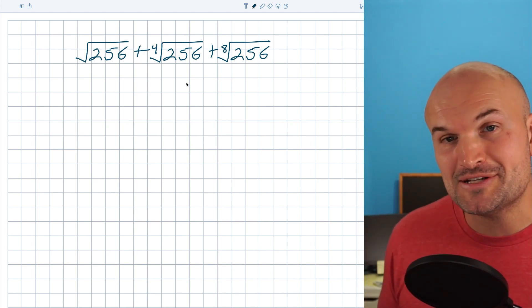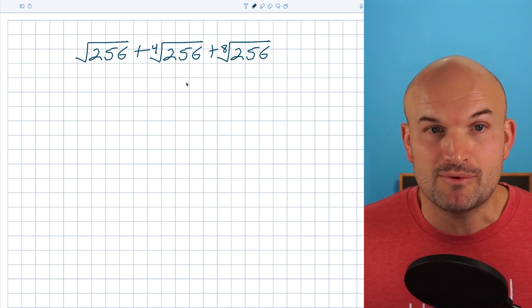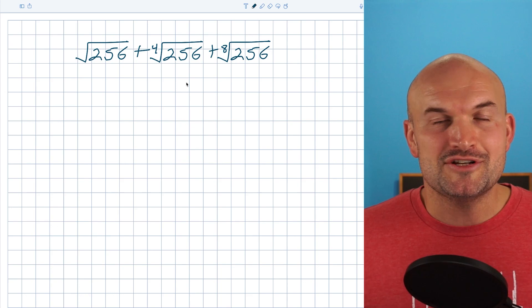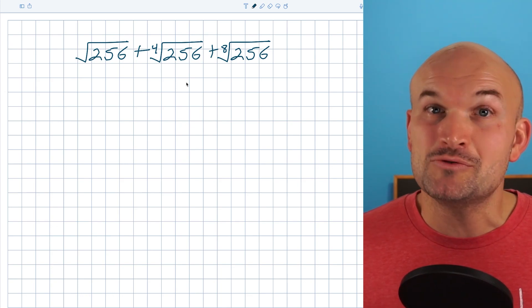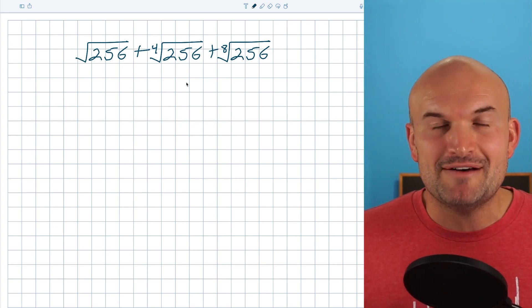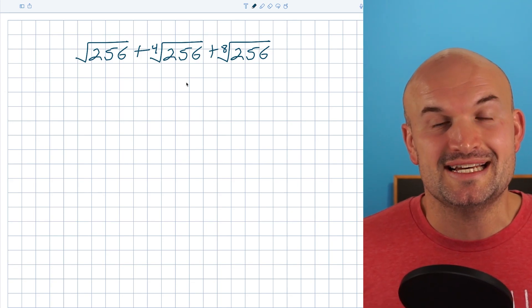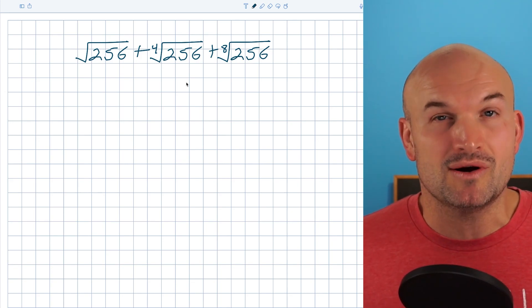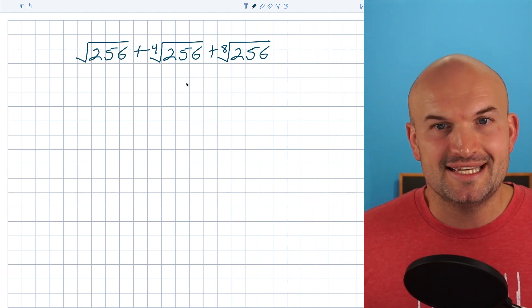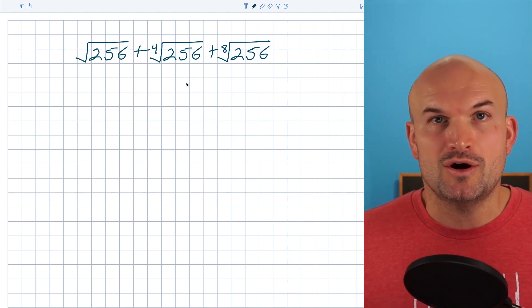And I mostly tell my students to memorize up to 15 squared, which is 225. So you might have a good guess that this would be 16 squared, but let's pretend you have no idea. And let's pretend you don't have a calculator. The cool thing I'd recognize is if we're multiplying something to the eighth power, it's going to have to be something pretty small to get us to 256.